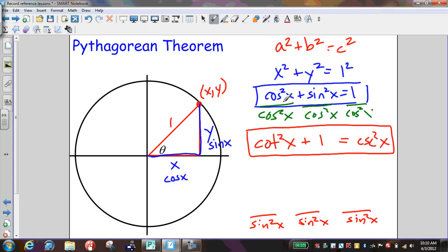And now when I do this, cosine squared divided by cosine squared is 1. Sine squared divided by cosine squared is tan squared. And 1 divided by cosine squared is secant squared. And that is the third Pythagorean identity we want to know. So those are the three.